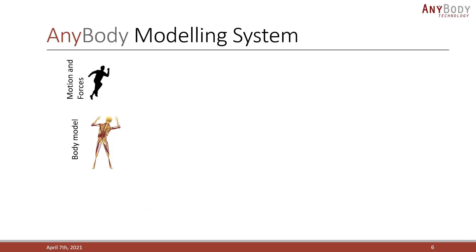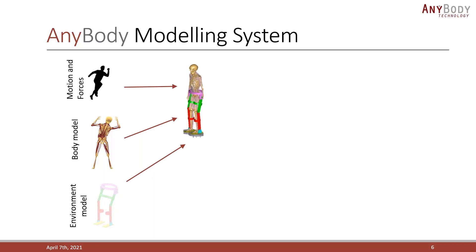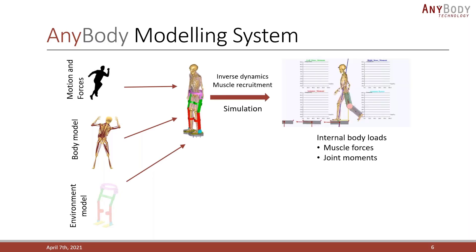The typical workflow in Anybody could look something like this. You provide the recorded motion data as input and use the body models which you or others have built. Then you provide some kind of environment, which could be for example an exoskeleton. You can then use Anybody to combine these things, solve the muscle recruitment, and run the inverse dynamic simulations, which basically means that you go from motion to calculate the internal body loads and the interaction with the environment in some cases.